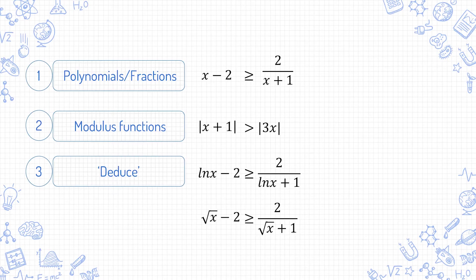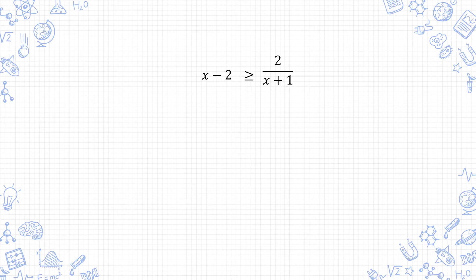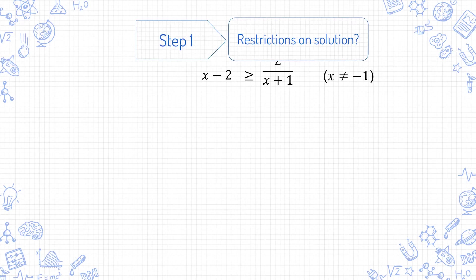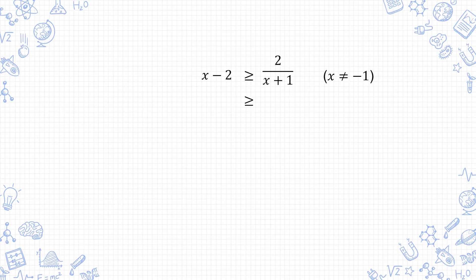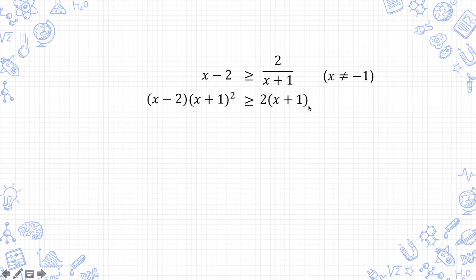Let's go back to the question categories, starting with the first one. With fractions, as I already said, you start by noting down the value of x which will make the denominator equal to 0. So there's a restriction that x cannot equal negative 1. Then the second step is to multiply both sides by the square of the denominator. As I already demonstrated, you get (x−2)(x+1)² ≥ 2(x+1). This is a polynomial function. If you get an expression like this right from the start, not in a fraction, you can just start following the steps from here.